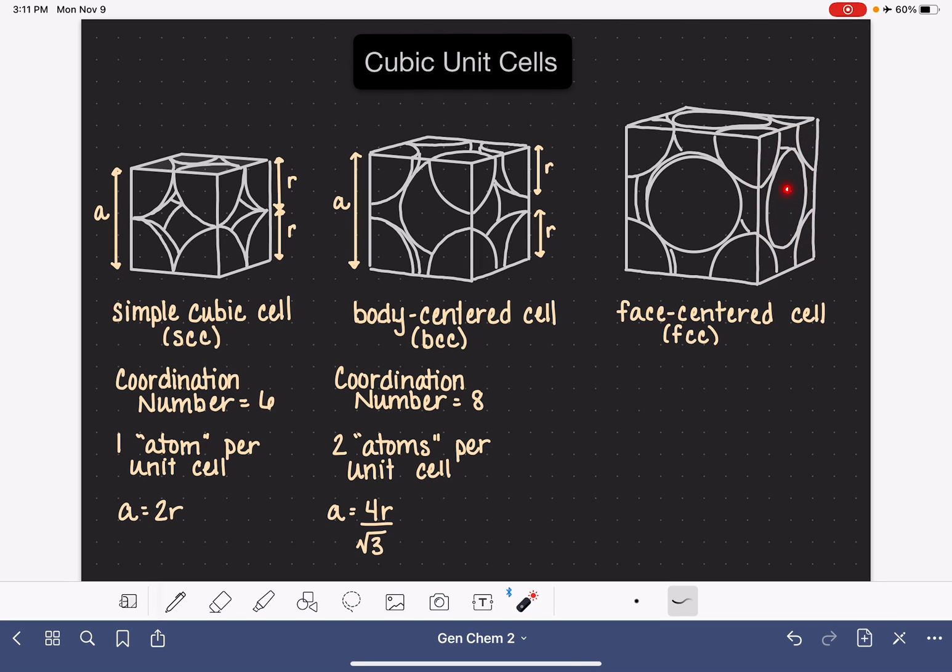So we've counted up to four atoms. In addition, this atom is in direct contact with all of the other atoms that are located on the adjacent faces as well. So we've got one, two, three, four atoms that it's in contact with.